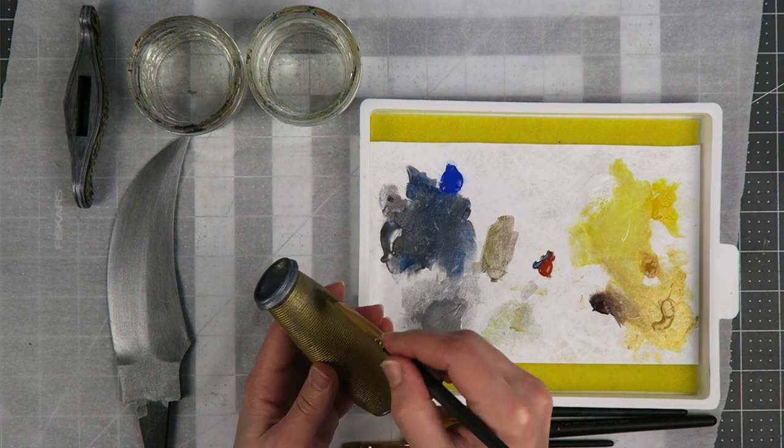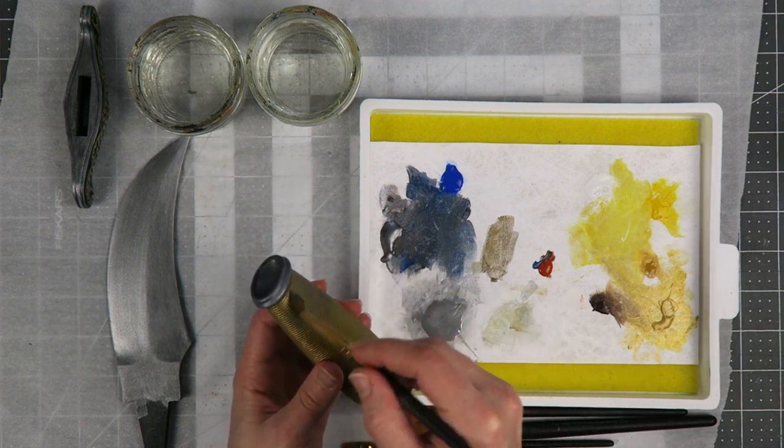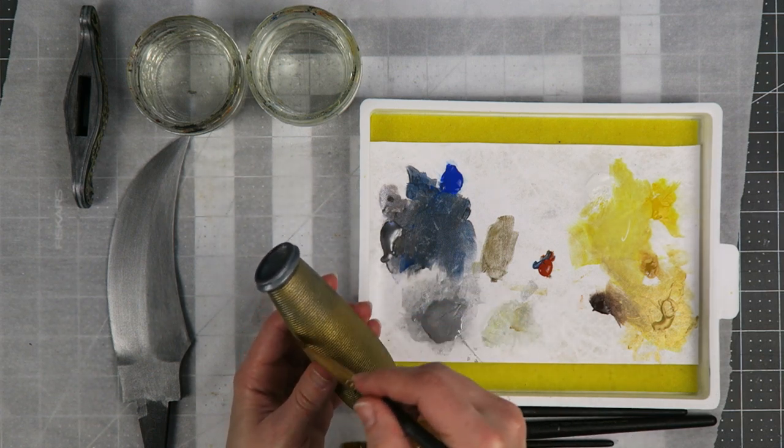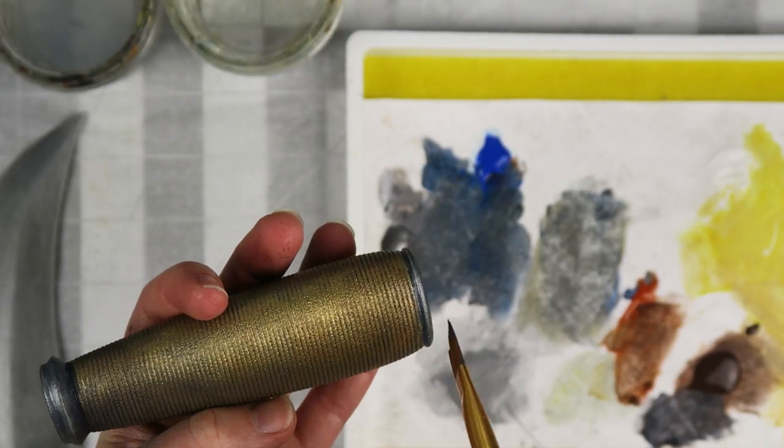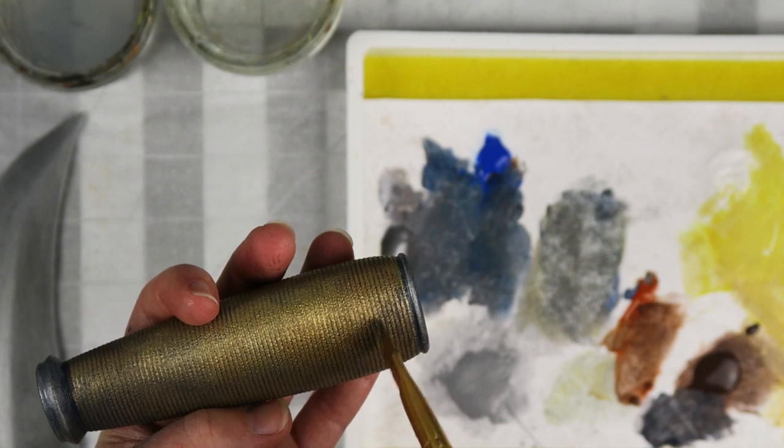On the hilt, I'm adding in some silver and some of the burnt umber and a bit of orange, and then wiping most of that away, just doing a series of washes so that I can highlight that texture that's built into the model.